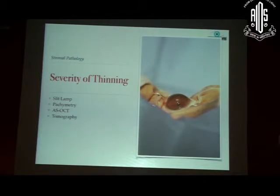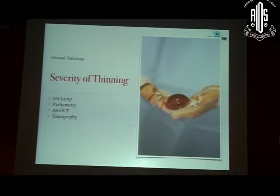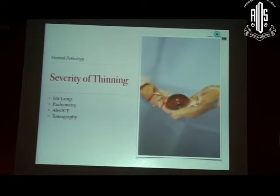Assess the severity of the thinning — how thin is it, and is it peripheral or central thinning? Because that will help you choose the type of procedure. An extensively thinned-out cornea may not be a good candidate for a big bubble type of deep anterior lamellar keratoplasty. If you have peripheral thinning like in Terrien's marginal degeneration, then the big bubble may not be very useful, since we know the big bubble doesn't really go to the peripheral part of the cornea — it typically travels to about 8.5–8.25mm in the central cornea. A pre-Descemet's type of deep lamellar keratoplasty would be better in such cases.